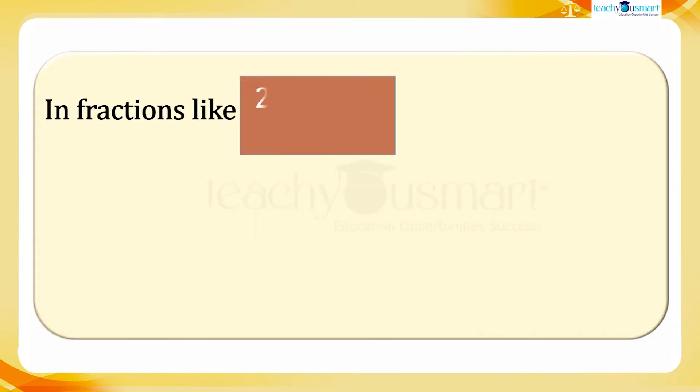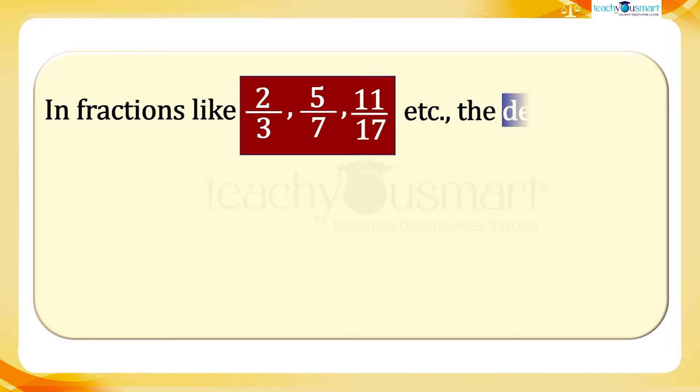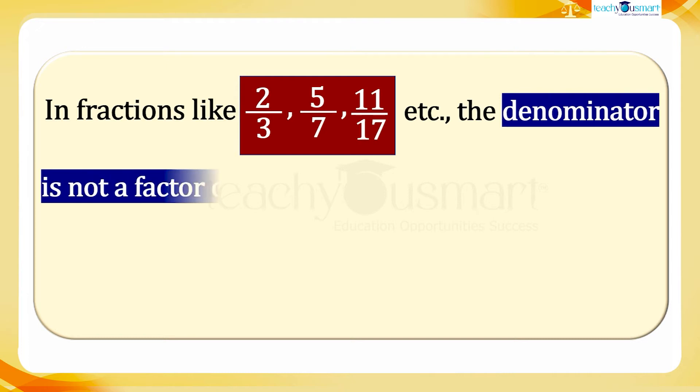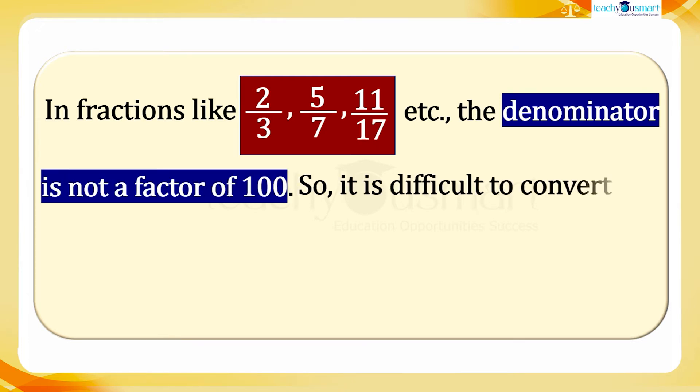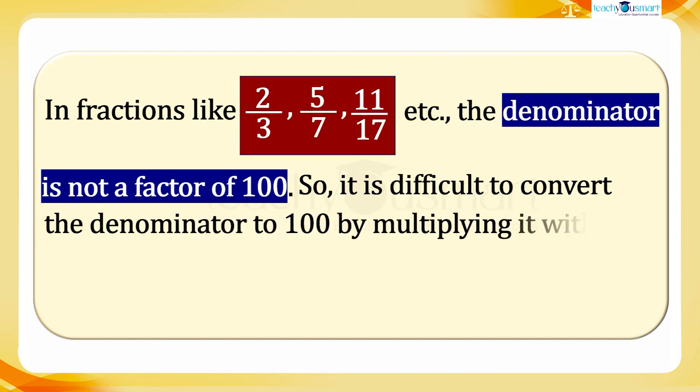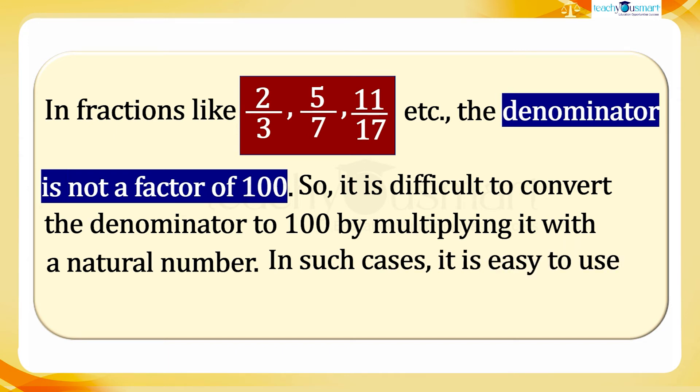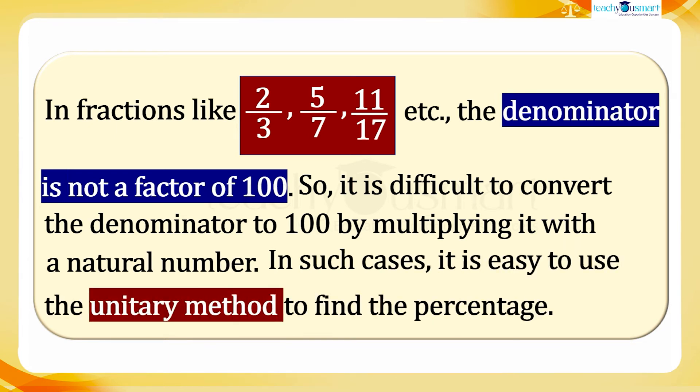Percent in fraction like two by three, five by seven, 11 by 17, etc., the denominator is not a factor of 100. So it is difficult to convert the denominator to 100 by multiplying it with a natural number. In such cases it is easy to use the unitary method to find the percent.